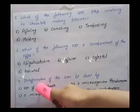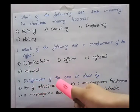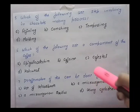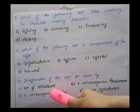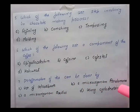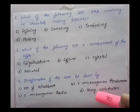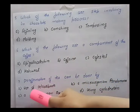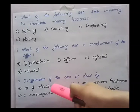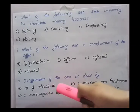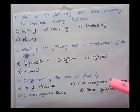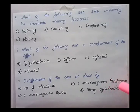Next question: decaffeination of tea can be done by — the options given are use of adsorbents, microorganism Pseudomonas, microorganism Bacillus, and using cyclodextrin. First option — use of adsorbents — yes, by using various adsorbents we can decaffeinate the tea. Second option — microorganism Pseudomonas — yes, Pseudomonas species are used for decaffeination of tea.